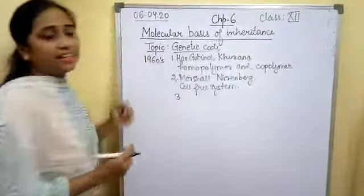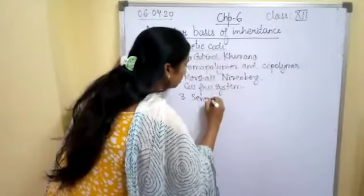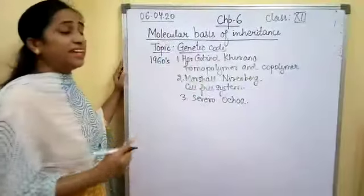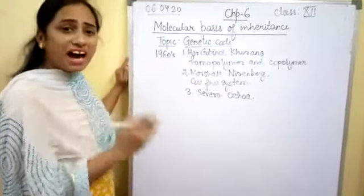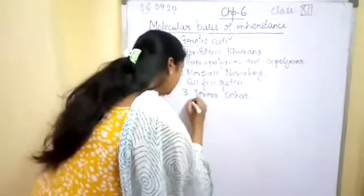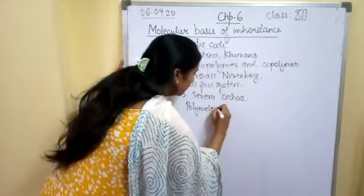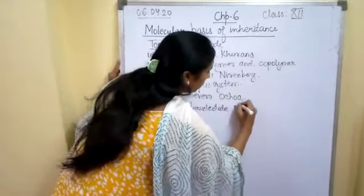The third scientist was Severo Ochoa. What he said? He said there is enzymatic synthesis of the RNA molecule with the help of enzyme known as polynucleotide phosphorylase. With the help of this enzyme, RNA synthesis takes place.